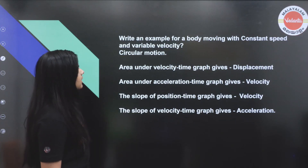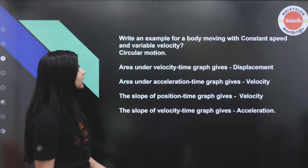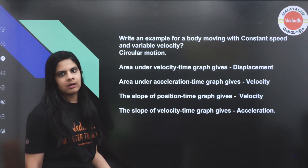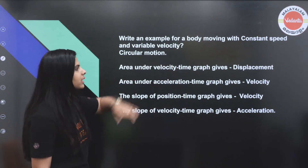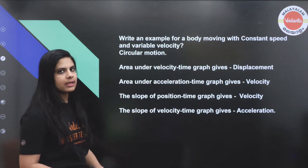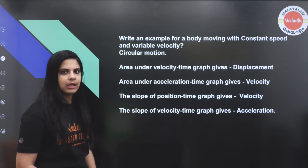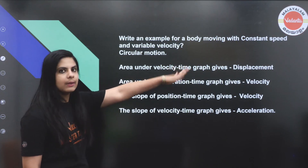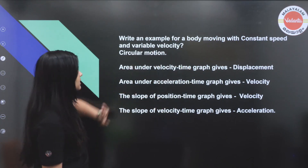Write an example of a body moving with constant speed but variable velocity. The answer is circular motion — in circular motion, speed is constant but velocity always changes direction.